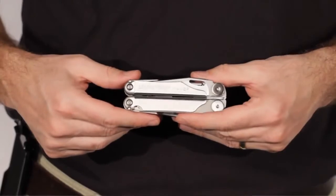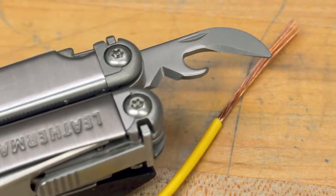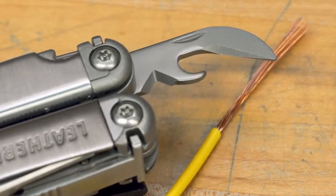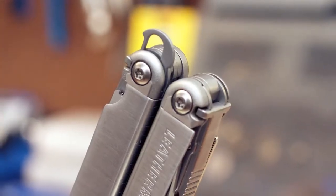There's no wasted space in the Wave. Two examples are the handy wire strippers here at the bottom of the can opener and the lanyard ring tucked into the base of the handle.